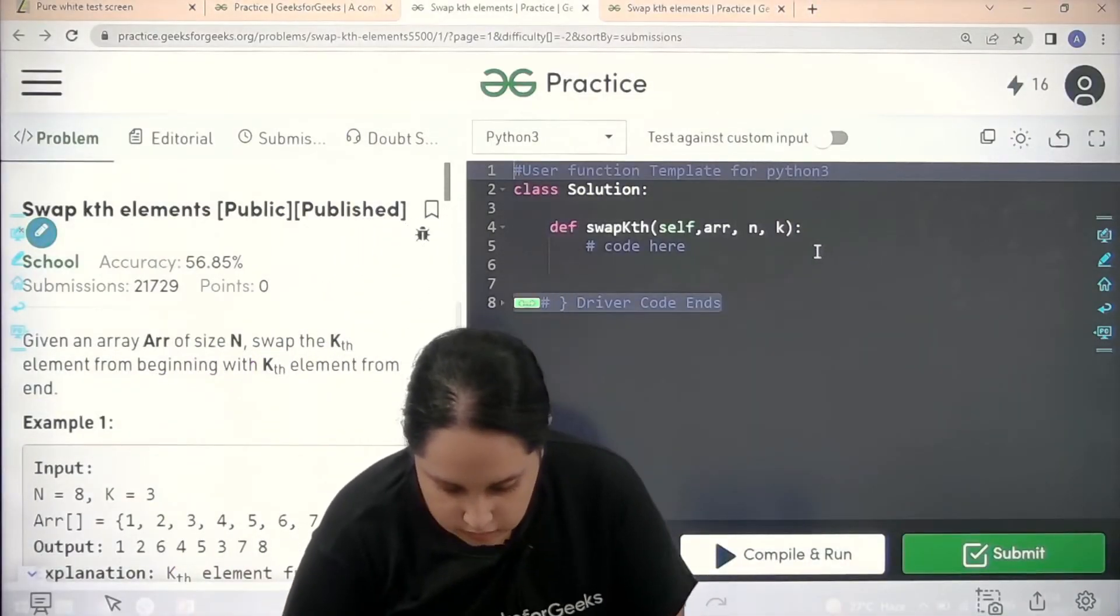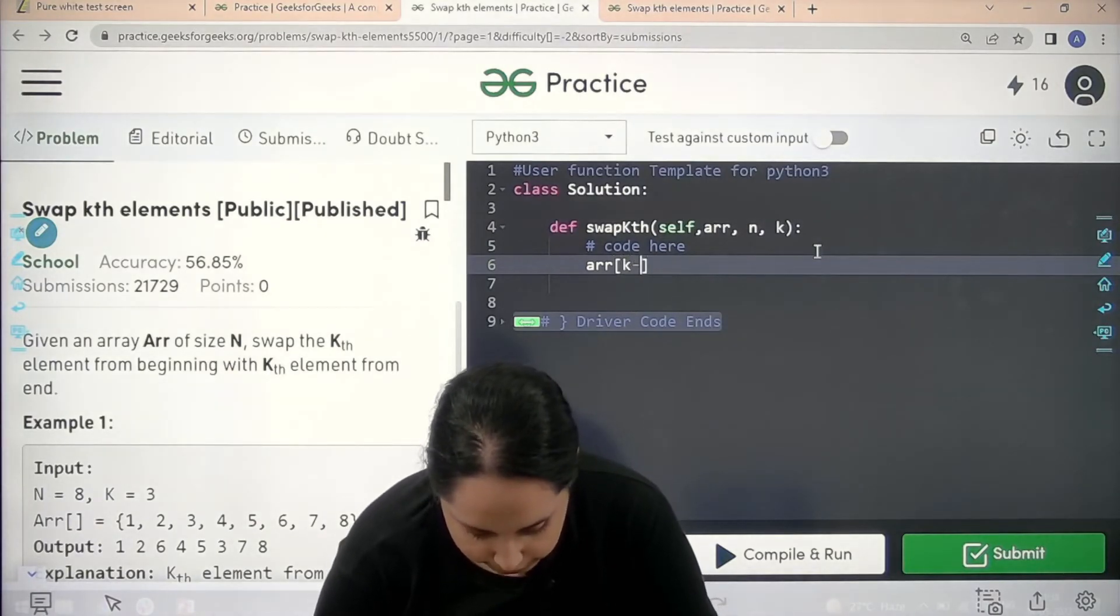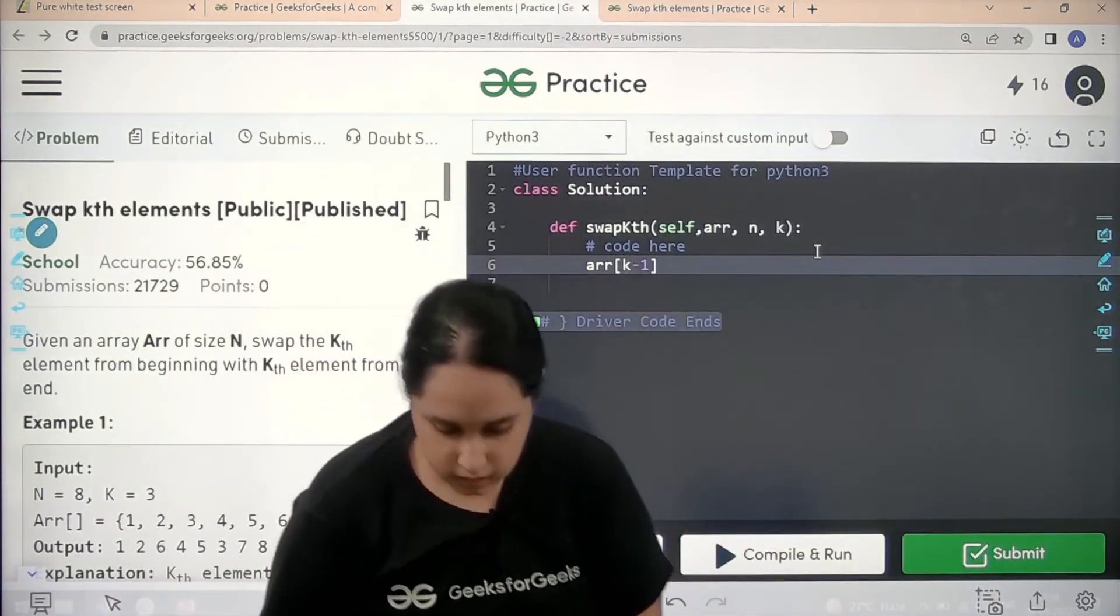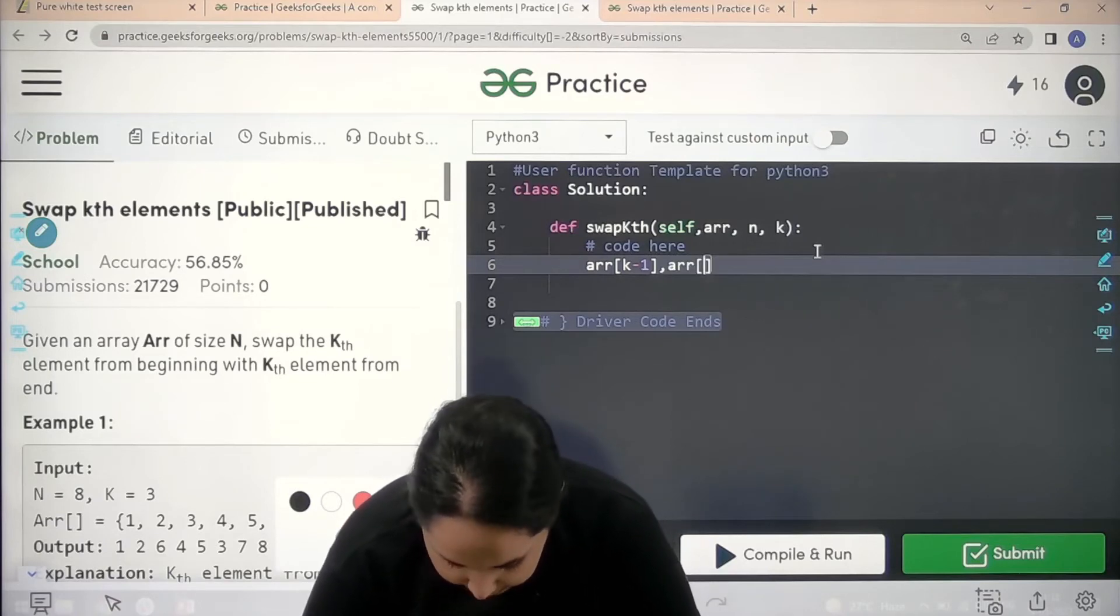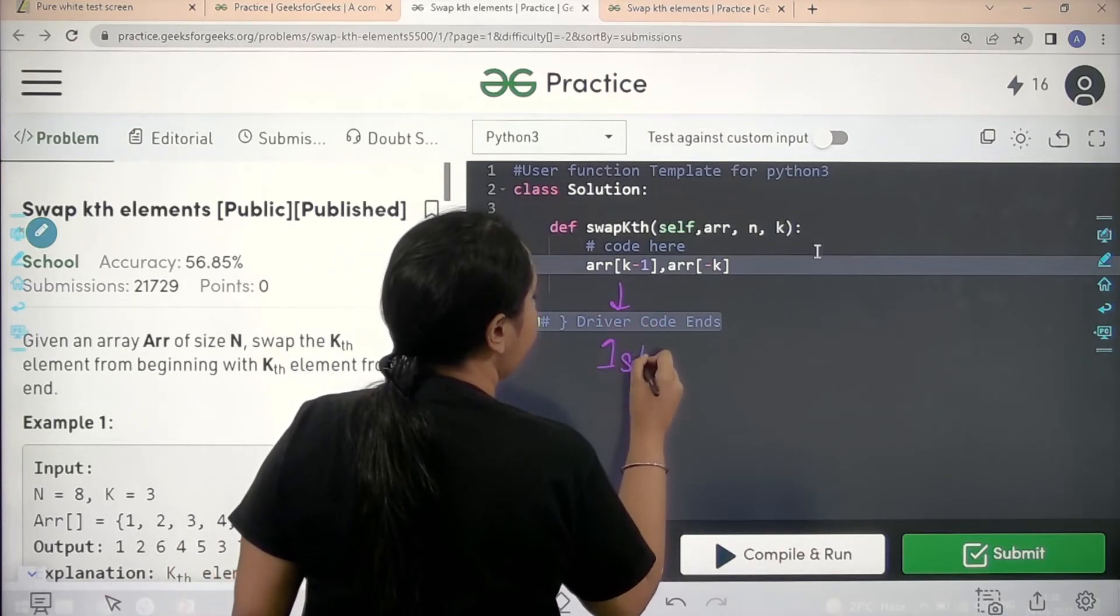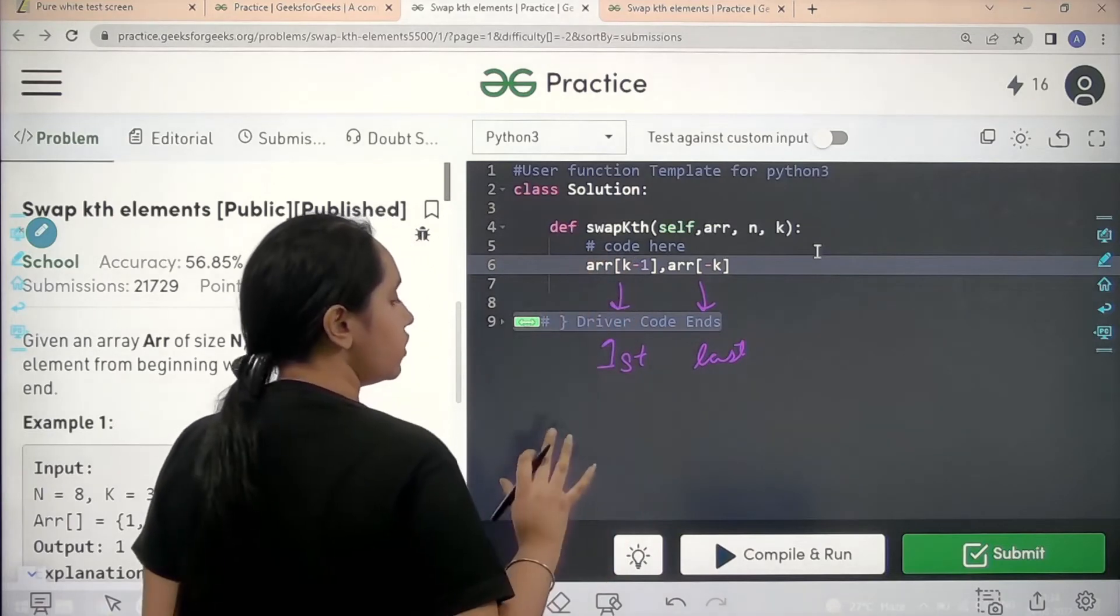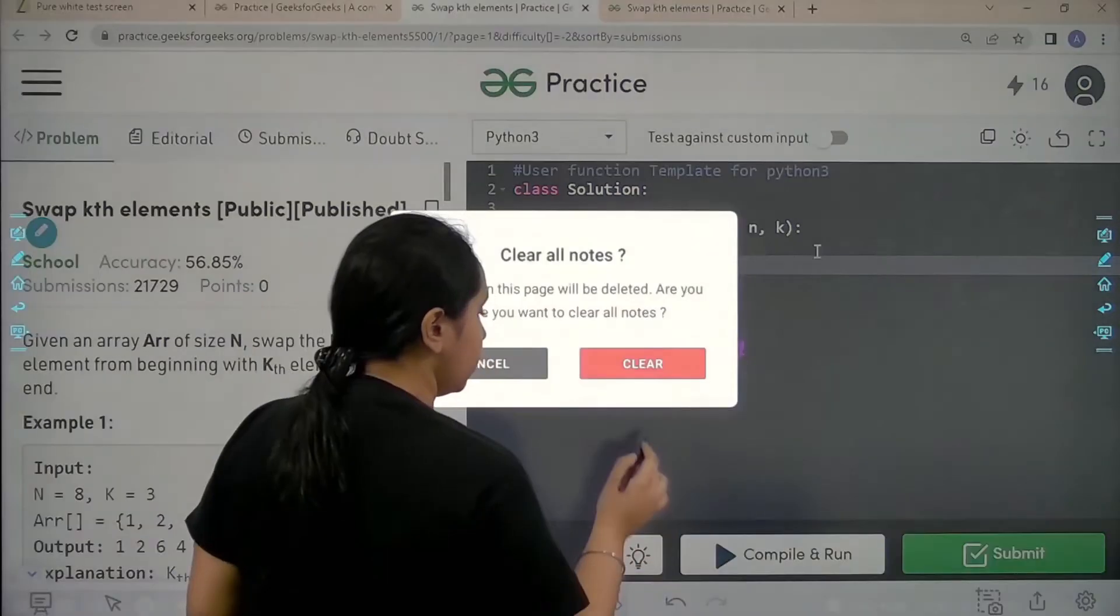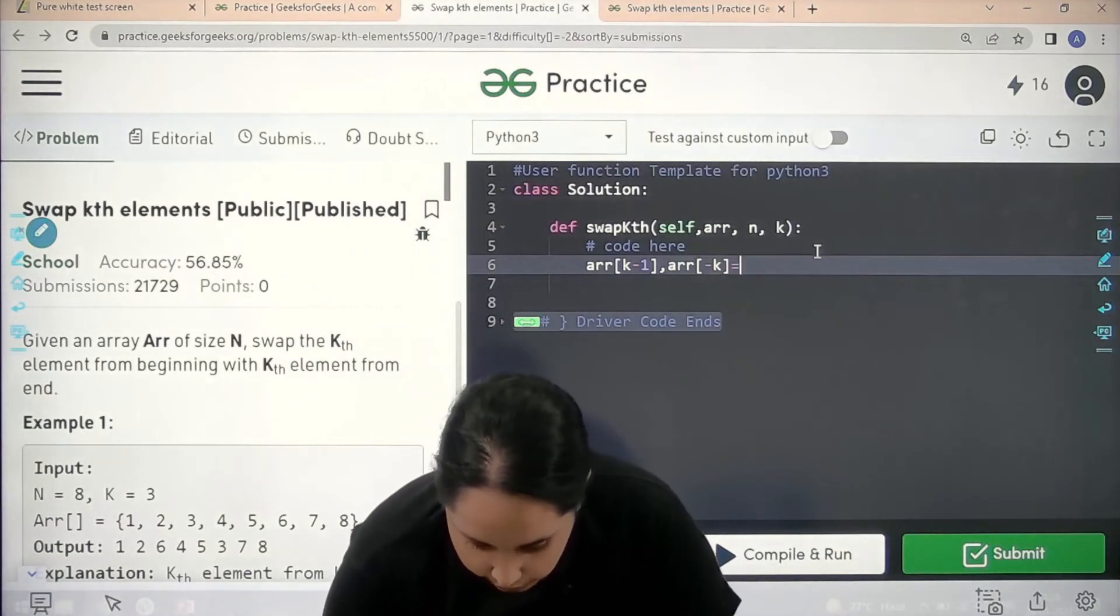Now basically like we discussed, I would just write array square brackets k minus 1, that is the first element, comma array. Then in the square brackets I would write minus k. This is the first element and this is the last element. So this is the first element and that is the last element.